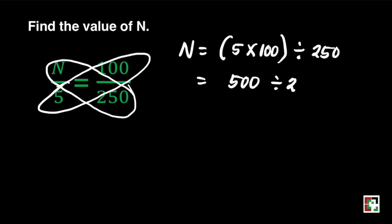5 times 100 is 500 divided by 250. We can do cancellation. What is left is 50 divided by 25. So, that is equivalent to 2. Our answer is equal to 2.